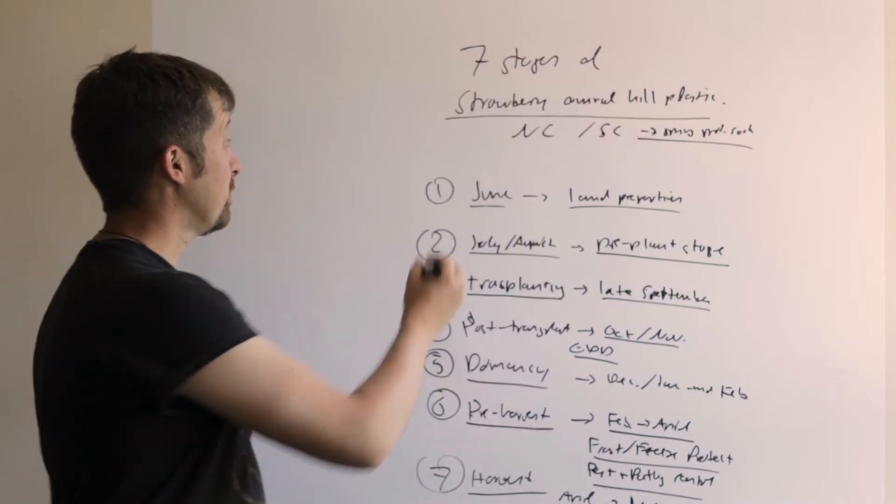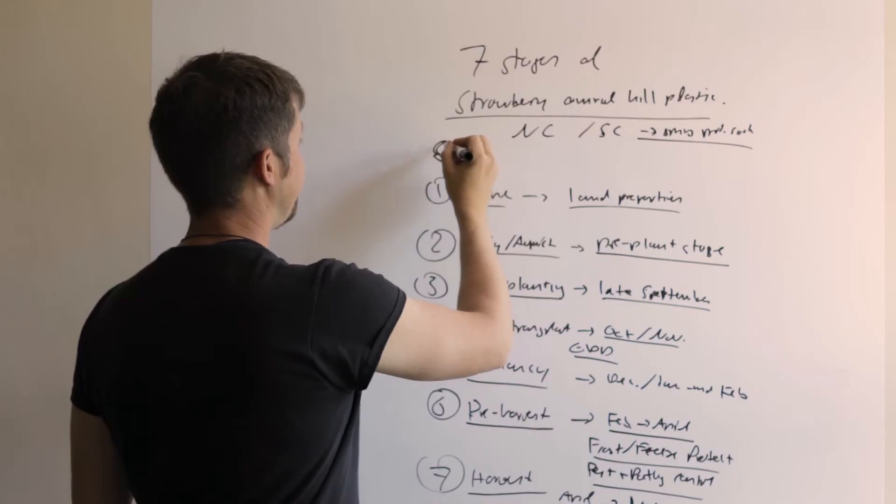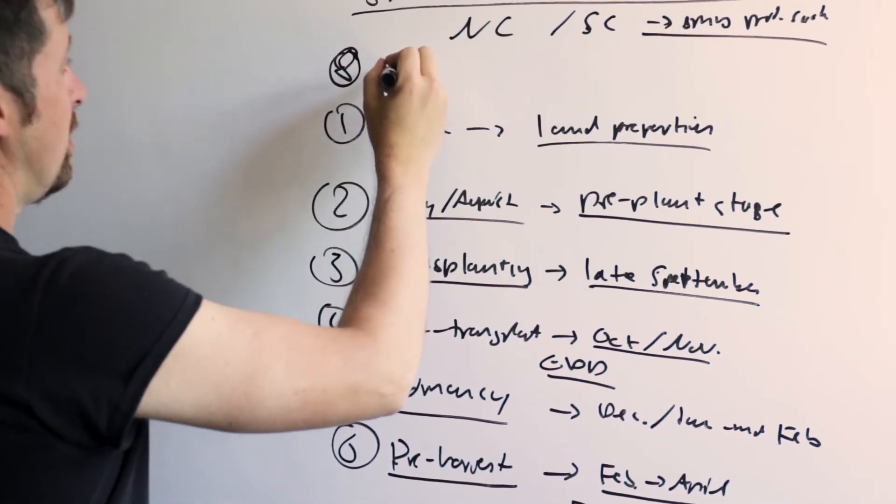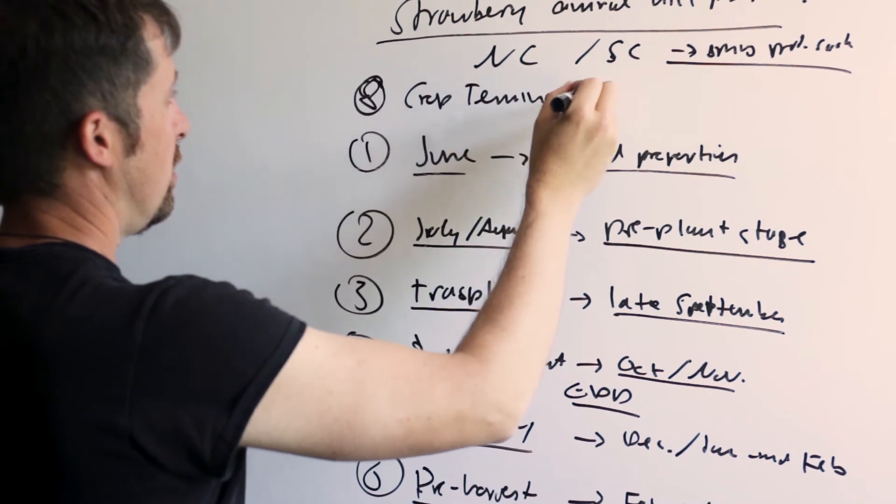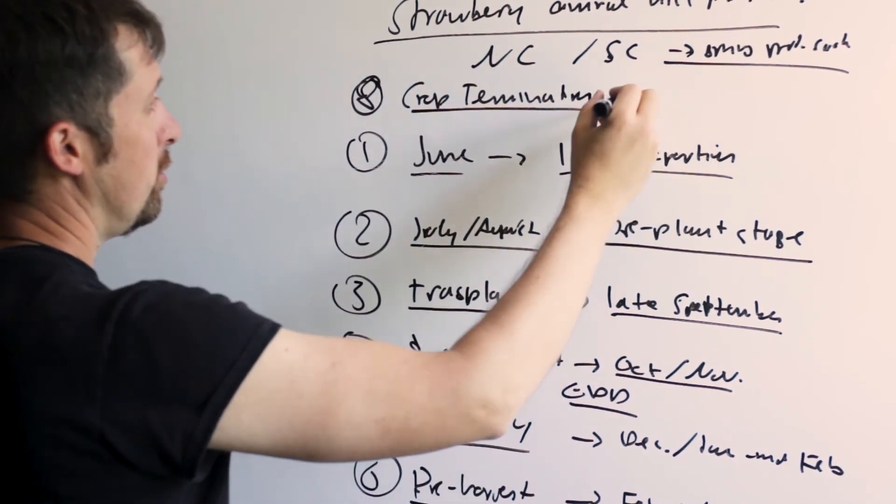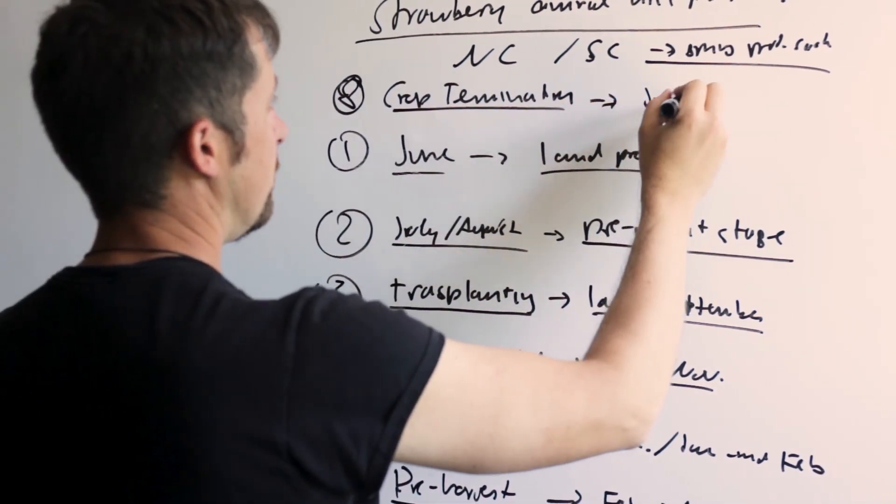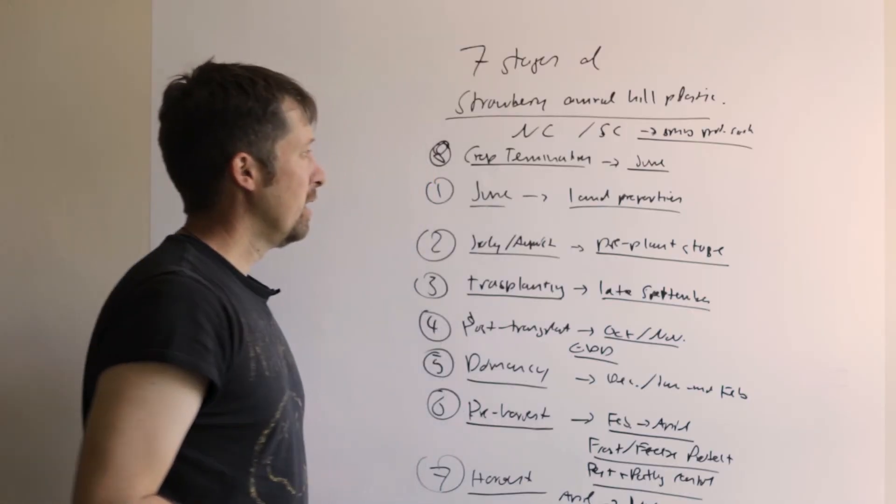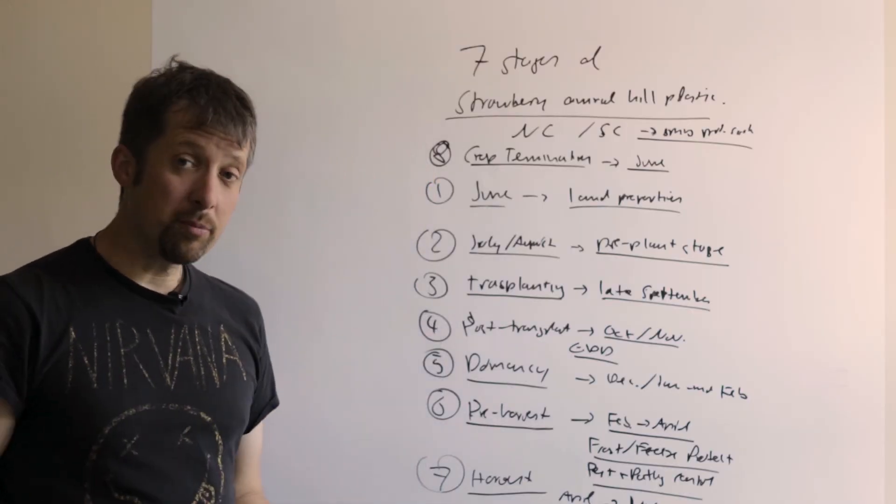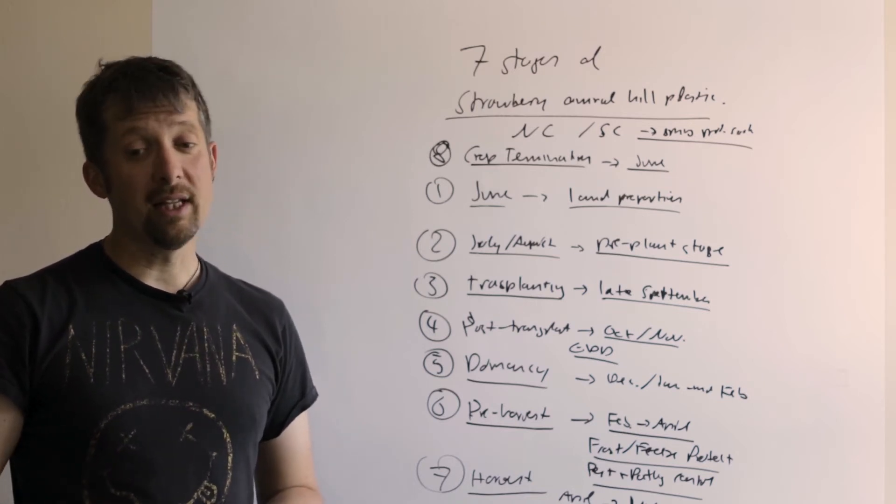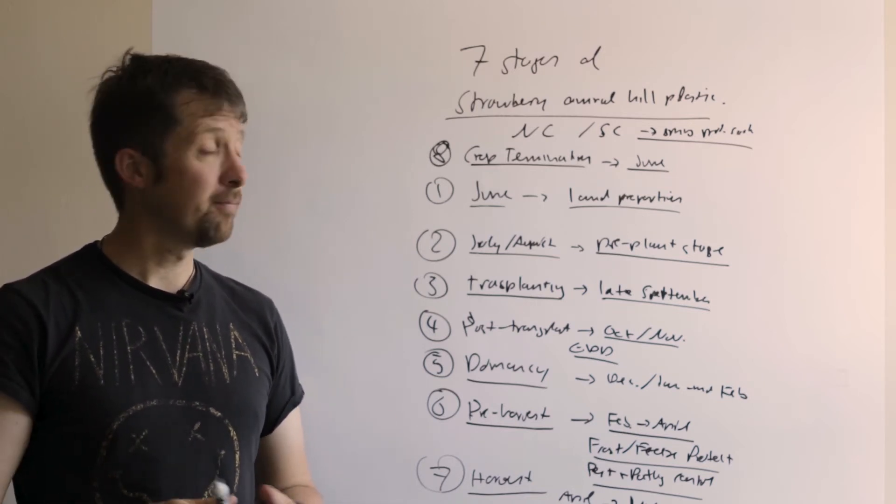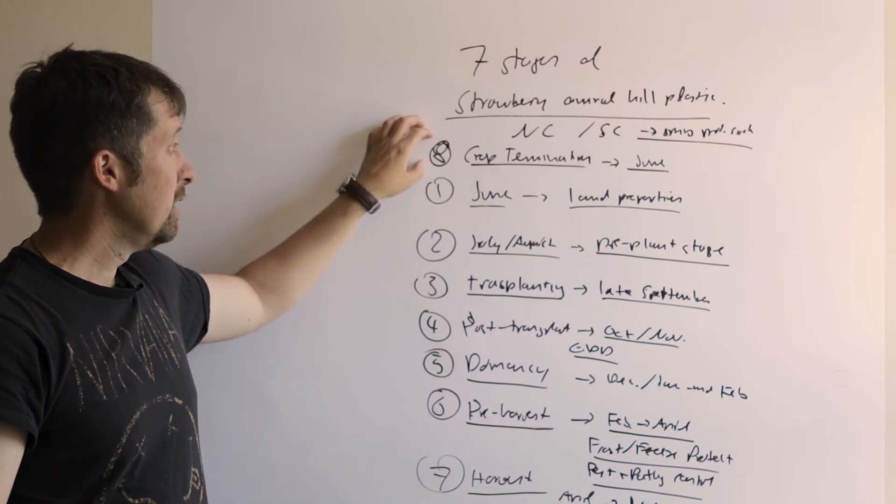So I would add an eighth step to this, which is crop termination. That would usually happen in June. And that would include spraying your plants with herbicide, taking them out, leveling the field, taking out the plastic. So that would be the last step of your growing cycle.